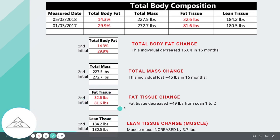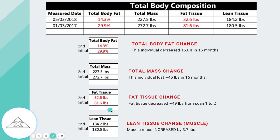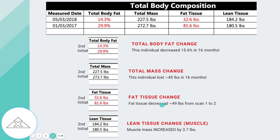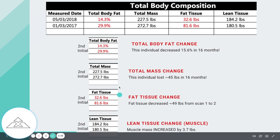Ideally, fat tissue has gone down and is trending downward, staying consistent over time so you've reached your goals. We want to see a downward trend and then a level off. For lean tissue, we only want to see a level off or an upward trend — we never want to see muscle mass go down.